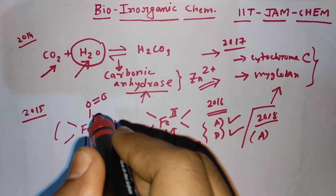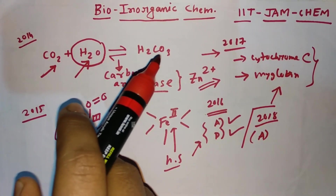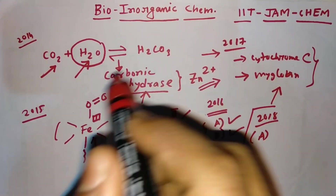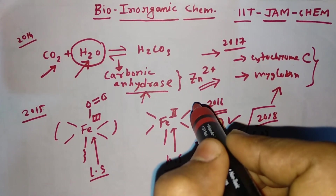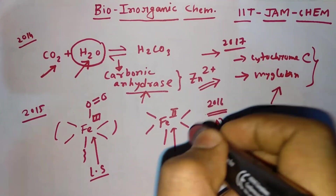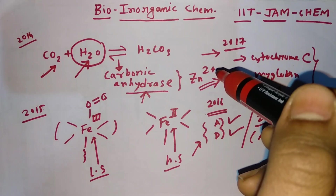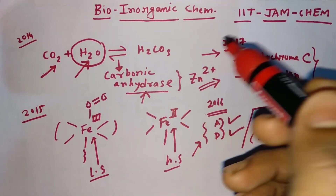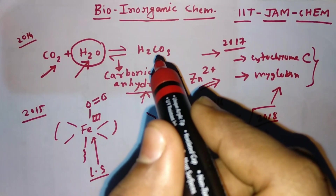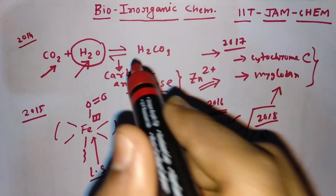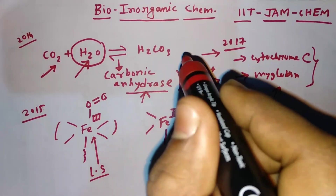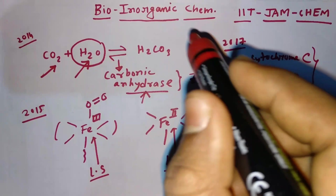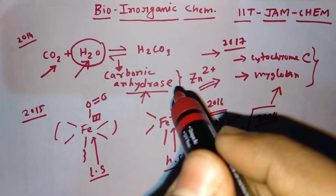If you face a question from hemoglobin and myoglobin, focus on: the oxygen binding process and structure formation by hemoglobin and myoglobin; the two metal ions Fe2+ and Fe3+ and their properties in those systems — specifically the high spin and low spin systems; the Bohr effect, which is very, very important; and the different heme groups like Heme A, Heme B, Heme C, Cytochrome A, Cytochrome B, etc. — their structures and the subunits present in them. Read these topics carefully and you will definitely solve the question from Bio-Inorganic Chemistry.